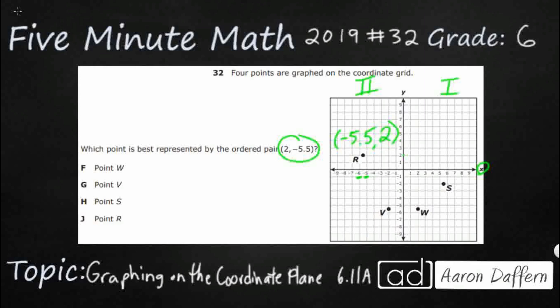It's got a -5.5 and it's got a 2. Unfortunately, they flipped them. They've got the x-coordinate where the y should be and so on and so forth. So it is not going to be this point R.